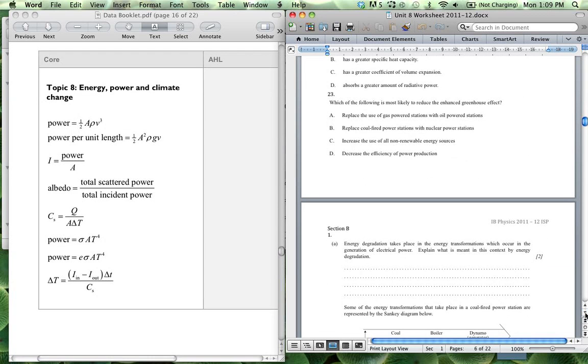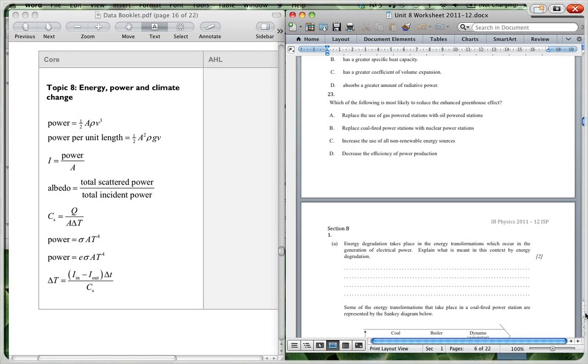And finally, question 23. Which of the following is most likely to reduce the enhanced greenhouse effect? Replace the use of gas-powered stations with oil. No, that won't work because gas power is more efficient than oil power. Replace coal-fired power stations with nuclear. That will reduce the greenhouse effect because nuclear power doesn't release greenhouse gases, doesn't release carbon dioxide into the atmosphere as does coal power. There may be some water vapor that is released, but we don't have carbon dioxide being released. So B would be correct. Increase the use of all non-renewable energy sources, that wouldn't help. And decrease the efficiency of power production. That certainly wouldn't help. So B is correct.